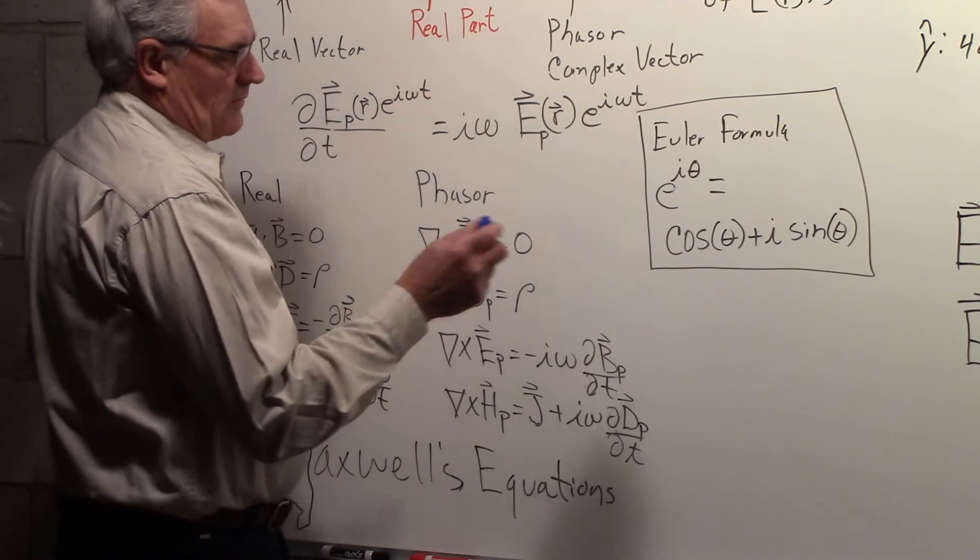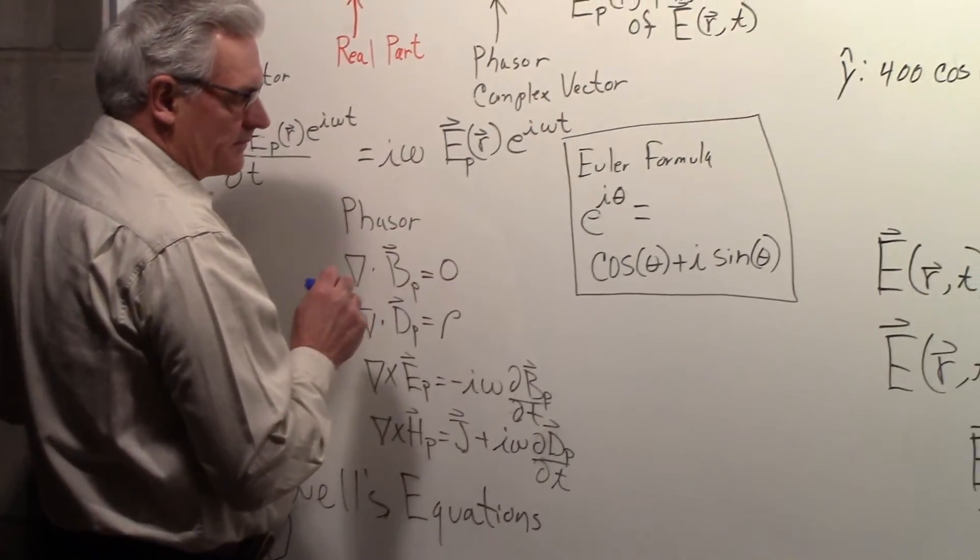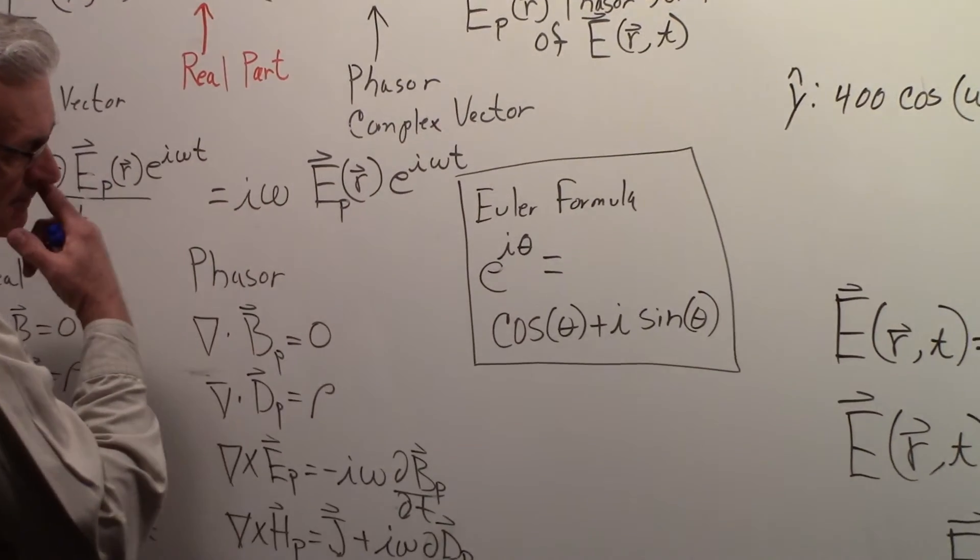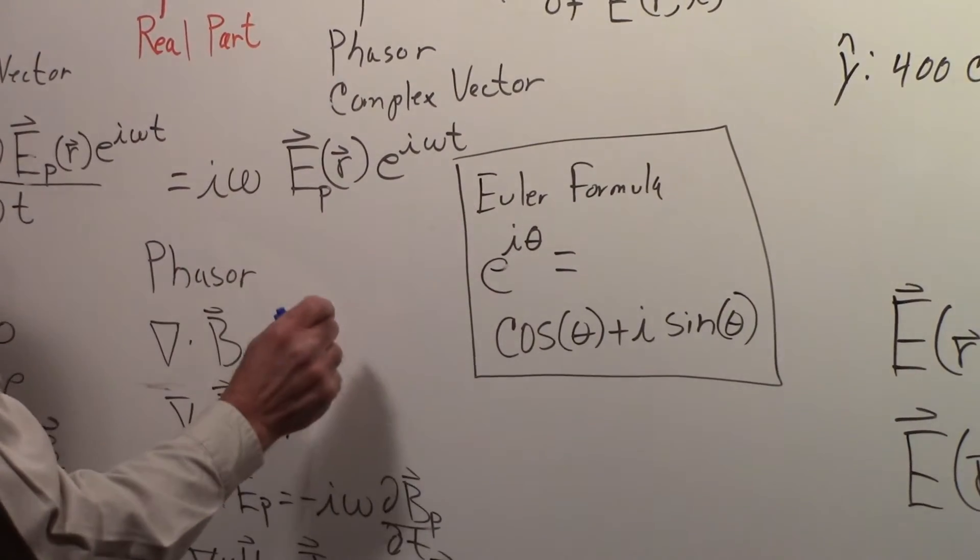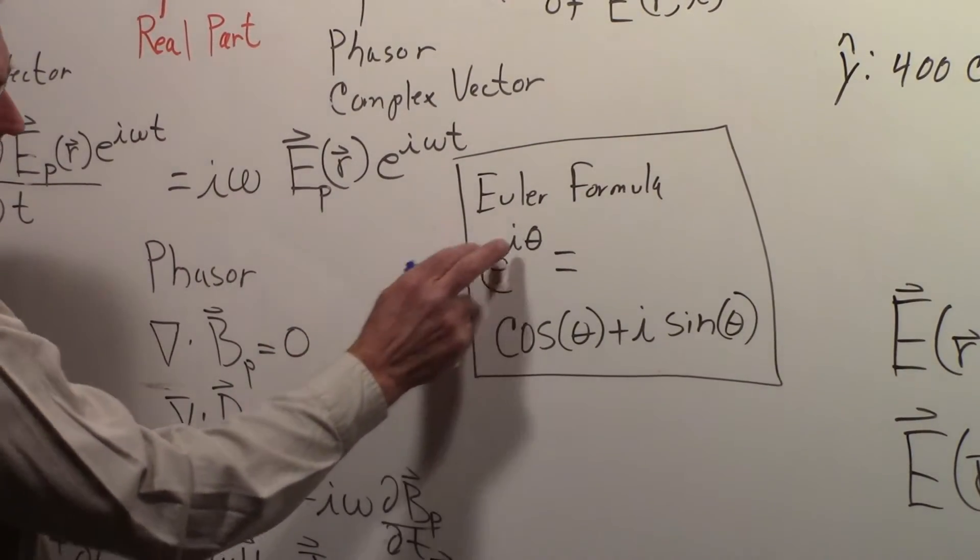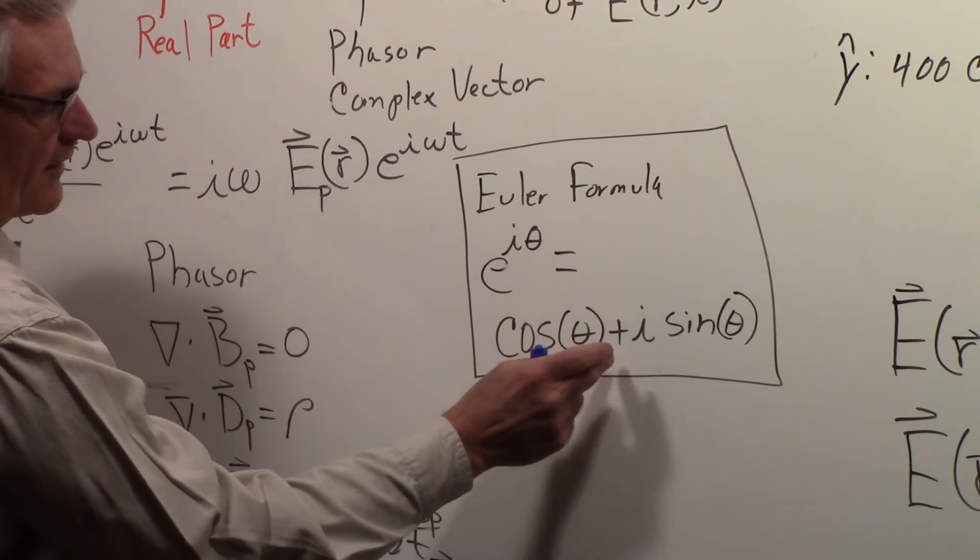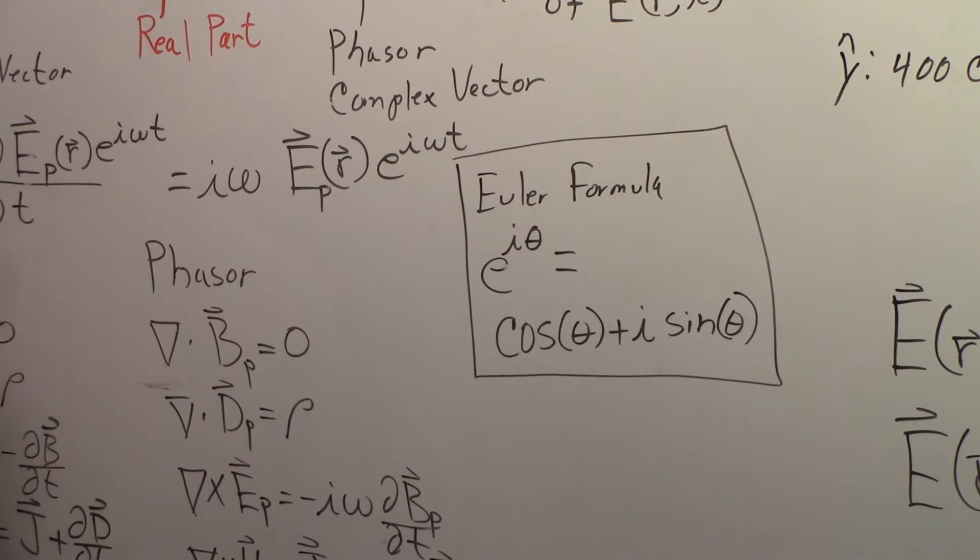One of the things that we'll need is Euler's formula. I hope I spelled it right. If not, Paul Moser will let me know. So e to the i theta is equal to cosine of theta plus i sine theta. It's a well-known relation, and we're going to use that.